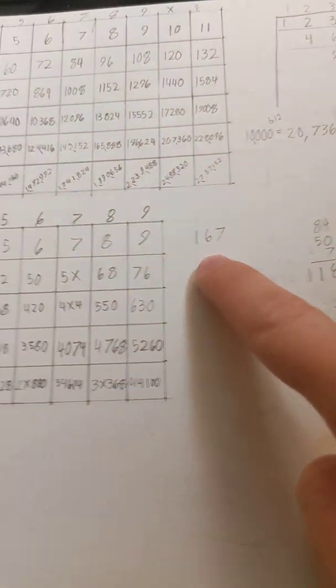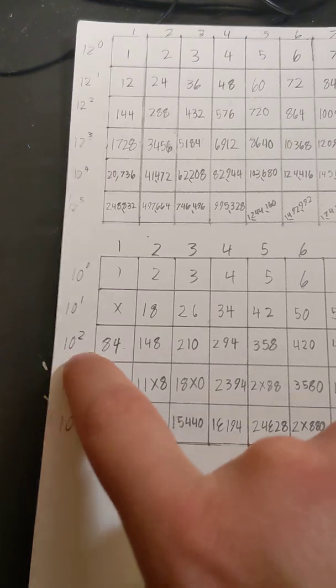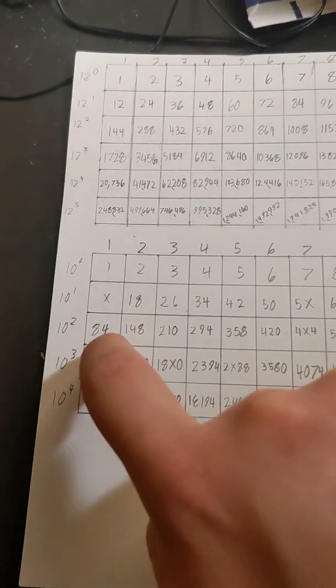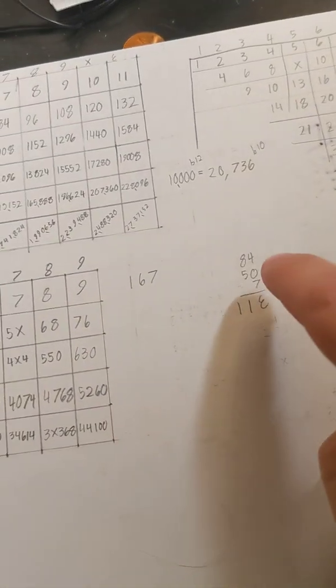So you can write 167 by looking at the 1, which is in the 10 to the second or hundreds place. So that would be written as what looks like 84 - it's not 84 in decimal, but that's how it looks in base 12.